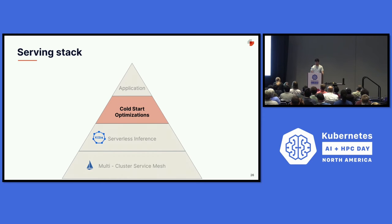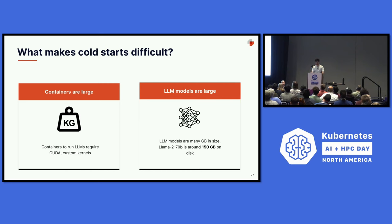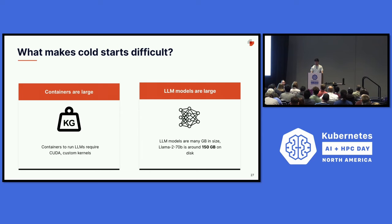This brings us to the next layer: cold start optimizations. Scaling these LLMs up is very difficult, and two of the reasons are that the containers are large and the LLM model weights are even larger. LLM containers are quite large because they have to be shipped with things like CUDA and custom kernels to actually serve the LLMs. Things like Llama 2 70 billion are about 150 gigs on disk, so we have to download all those weights and then load them up into the GPU.